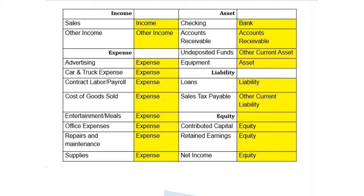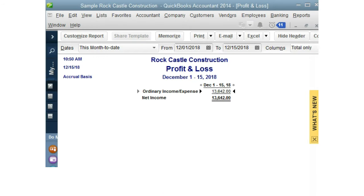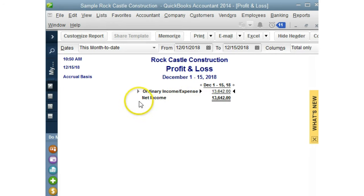Now let's take a look at two key reports that QuickBooks uses. The first one is the profit and loss. The profit and loss is composed of income minus expenses, and that will equal your profit or your loss. Which two of the five main account categories are part of the profit and loss? If you said income and expense, then you are correct. Here is the profit and loss in QuickBooks — here is your income, your expense, which equals your net income. In this case, it's a net profit.